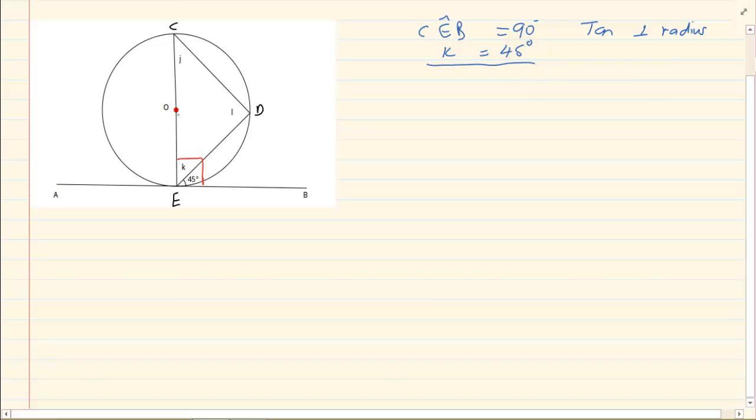Now look at what they are telling us. They are telling us that O is the center which means CE is a diameter. Immediately we should know. Now you should know your rules. You should be able to rattle them off. Angle at center. Angle in the same segment. Diameter. All these you should be able to know them very fast.